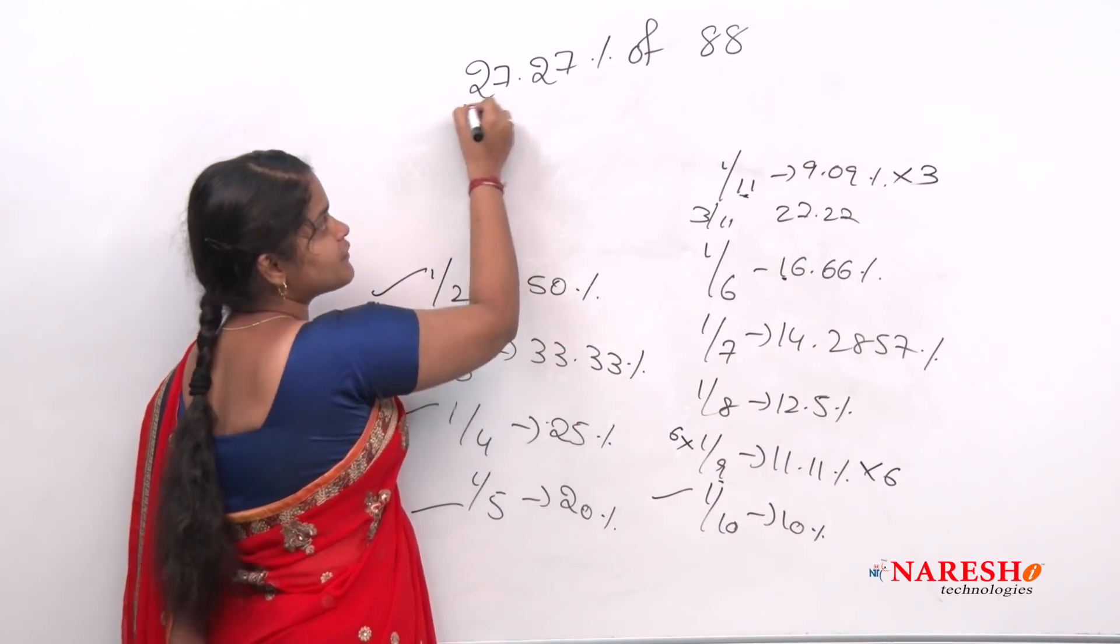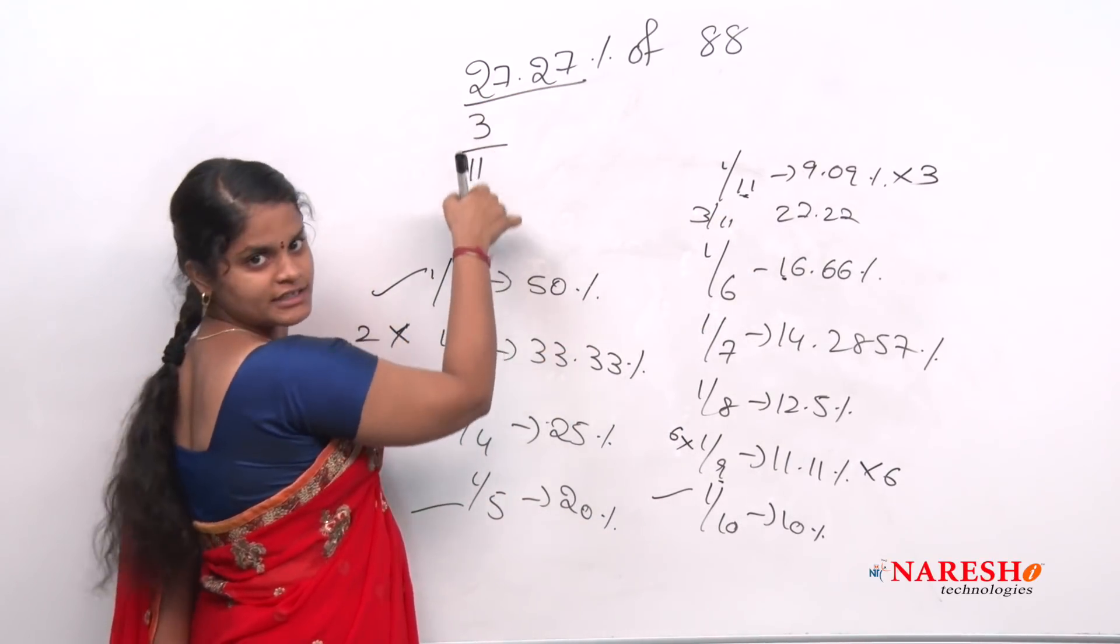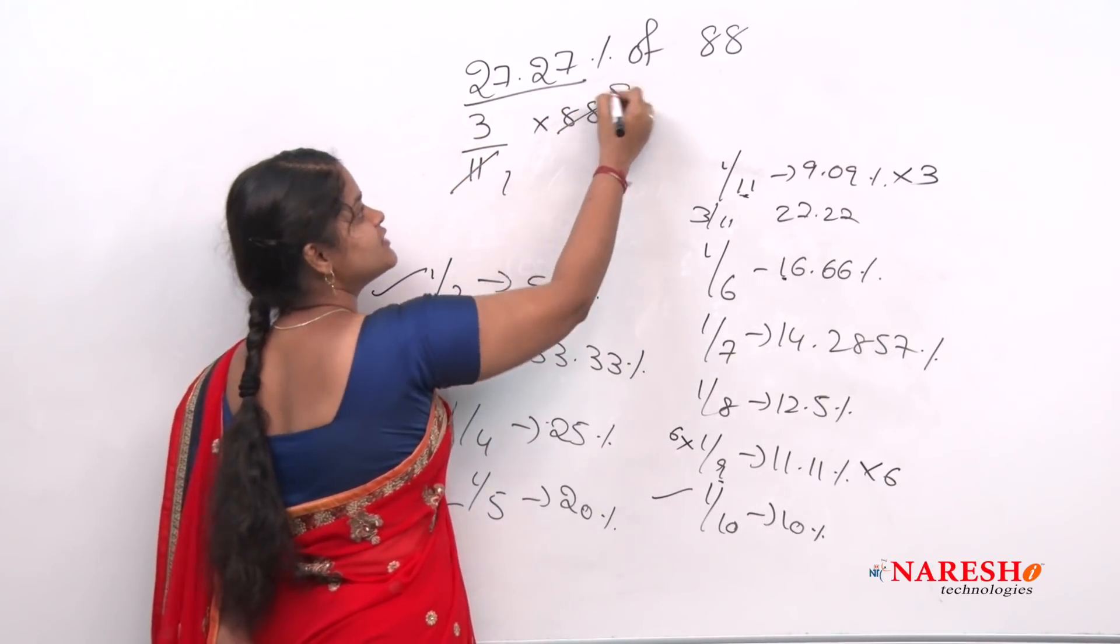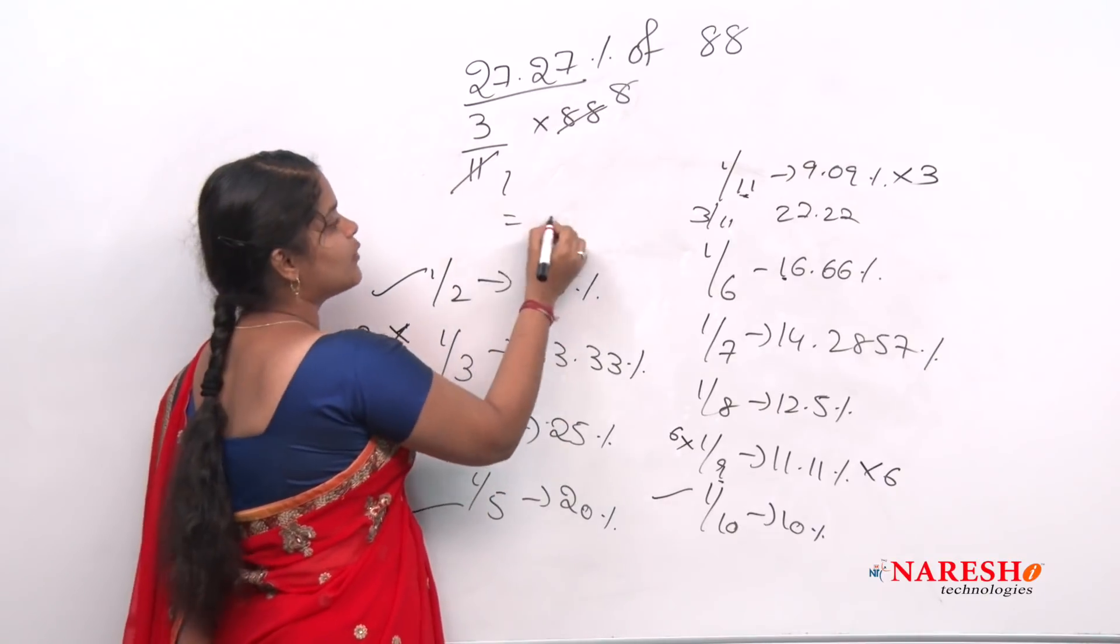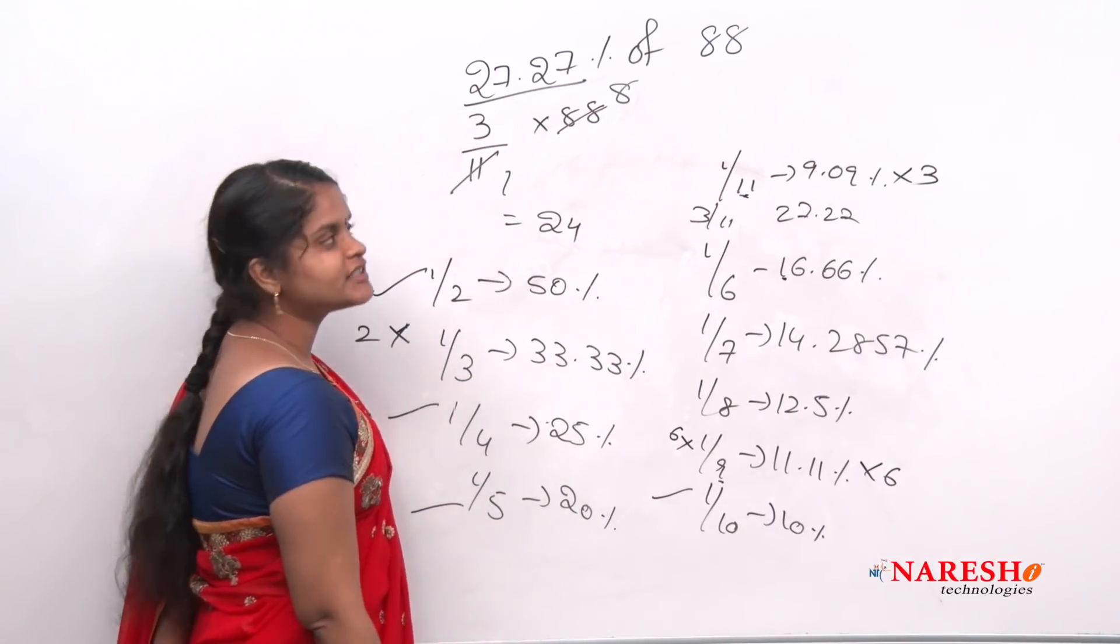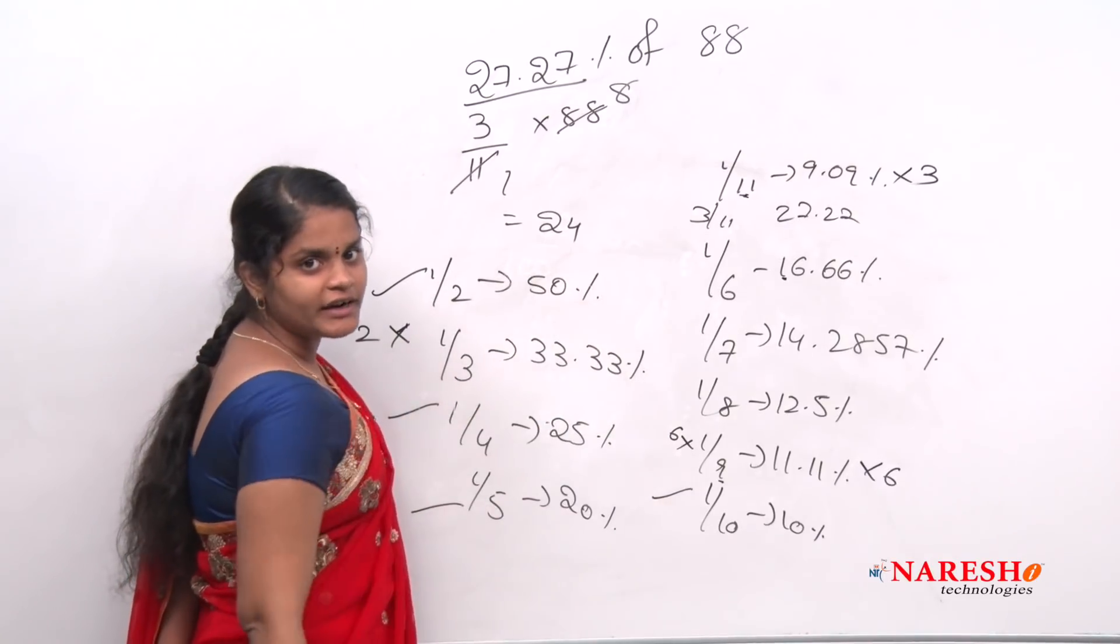So instead of entire side thing, I will just place 3/11 into 88. So 11 once, 11 eights. So how much it is? 24. So 27.27 percentage of 88 is nothing but 24.